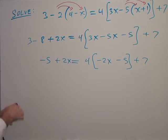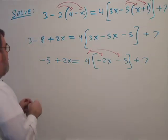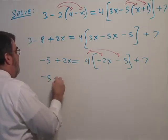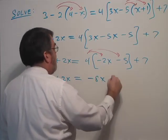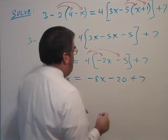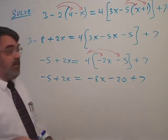And now let's break open the bracket by distribution again. And so this gives me minus 5 plus 2x equals negative 8x minus 20 plus 7. Alright, so I multiply 4 times each of those terms.